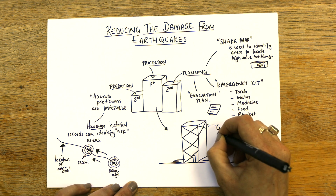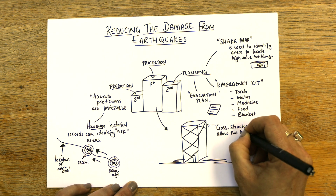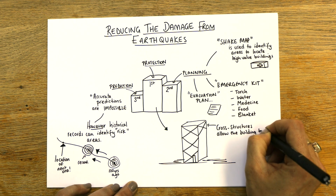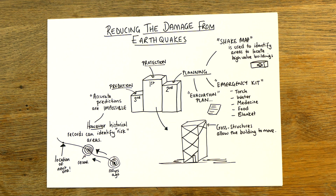These cross structures allow the building to move and twist. If you look at videos of Tokyo during an earthquake, the buildings are swaying and moving — they're not breaking. It's the buildings that can't move, that are rigid, that break.